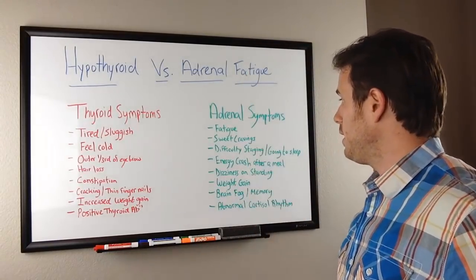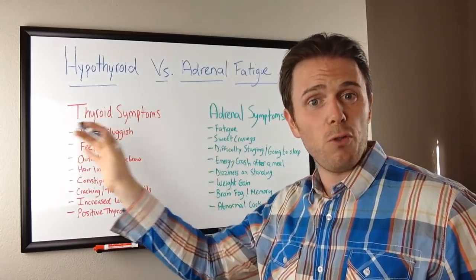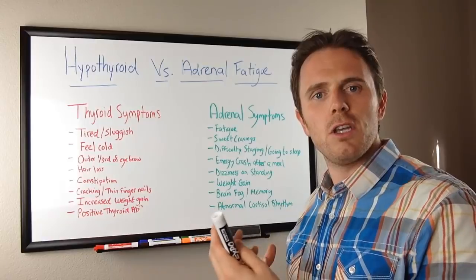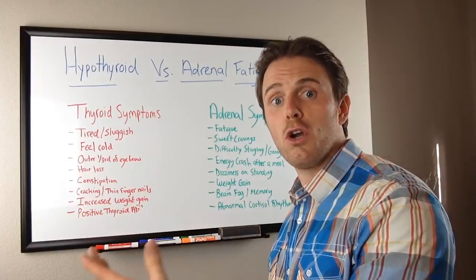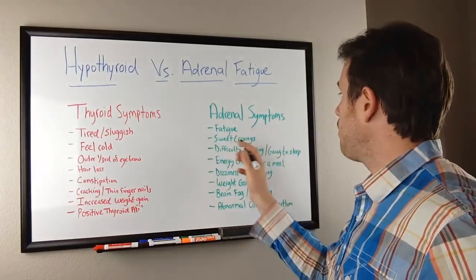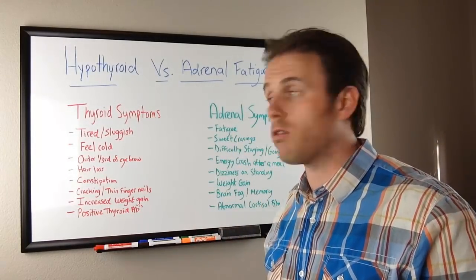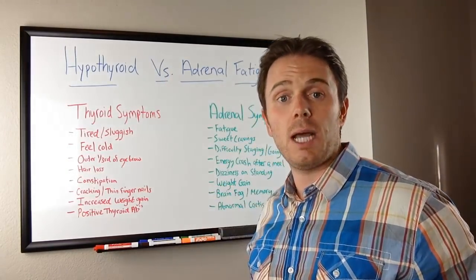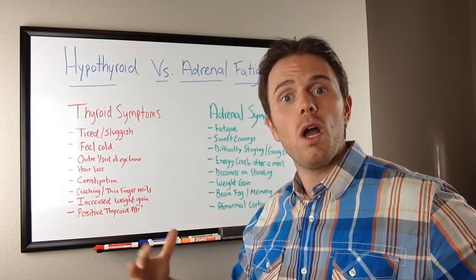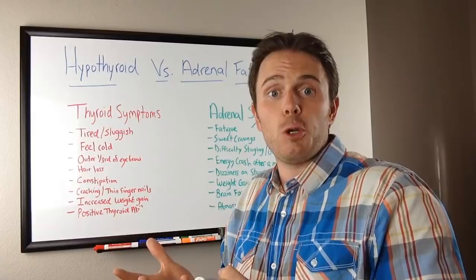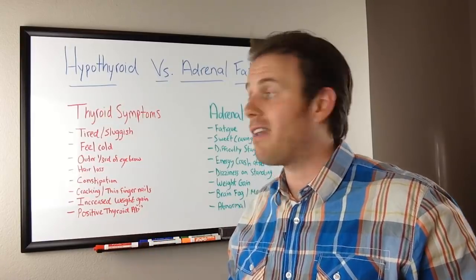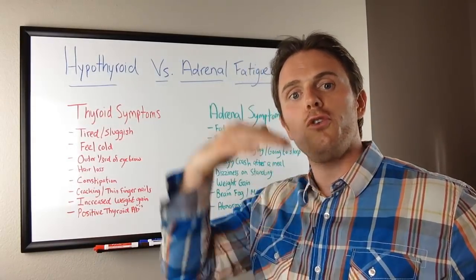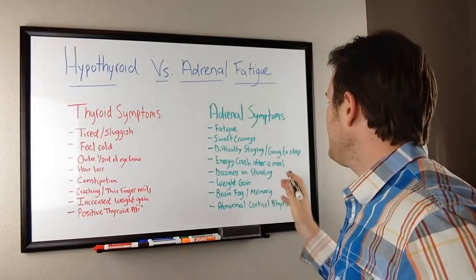With the adrenals, fatigue is again a common overlapping symptom. Sweet cravings tend to be more blood sugar-induced, and because your adrenals produce cortisol — a glucocorticosteroid, 'gluco' meaning blood sugar — sweet cravings tend to be connected with your adrenal glands. Difficulty staying or going to sleep is another sign: if cortisol is too high before bed, you may have trouble falling asleep; or if it drops too low, your adrenals produce adrenaline to bring blood sugar back up, which also wakes you up as a side effect. Energy crash after a meal is also a sign — if blood sugar goes too high, high amounts of insulin can cause fatigue.